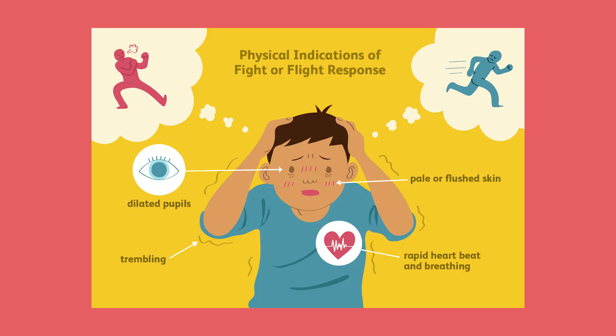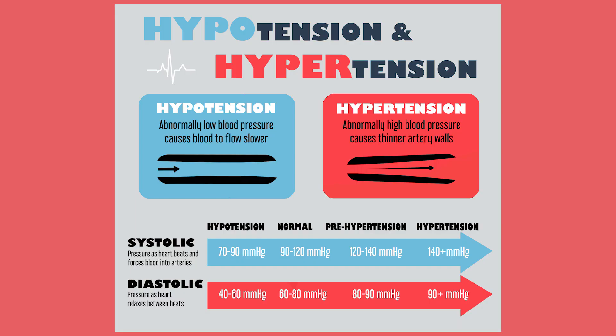Stress, like the fight-or-flight response, releases hormones like epinephrine and norepinephrine that constrict key vessels, increasing resistance to flow and raising the pressure upstream. Blood vessels can usually handle these fluctuations easily — elastic fibers embedded in their walls make them resilient.